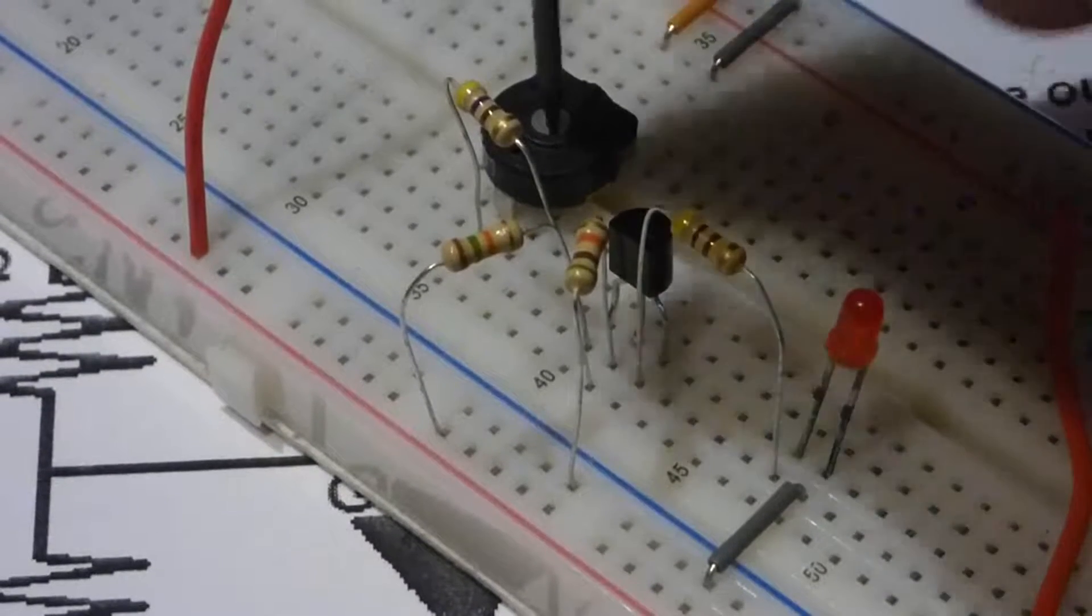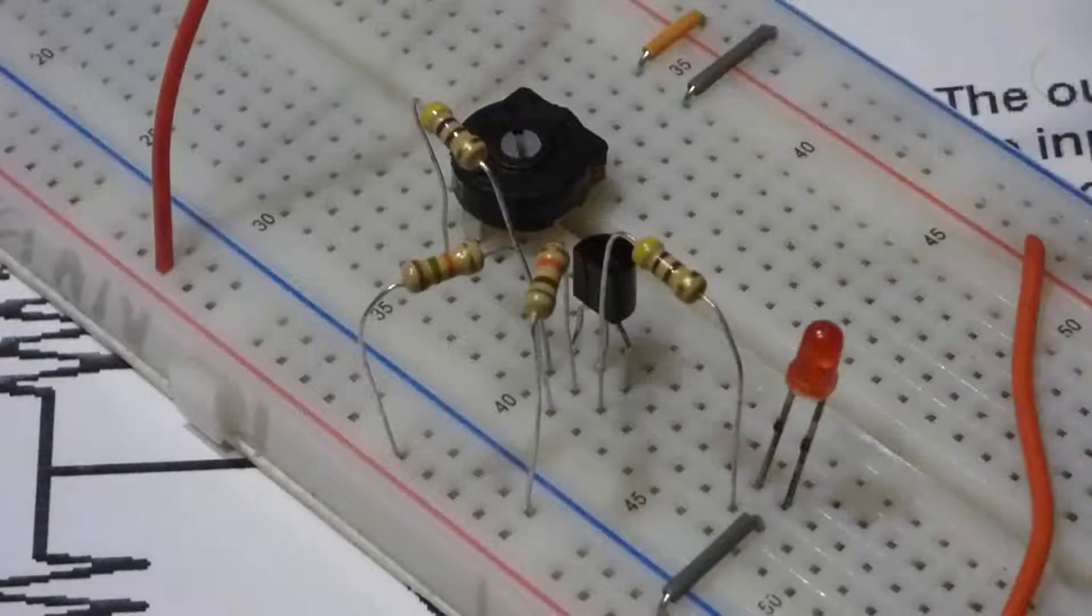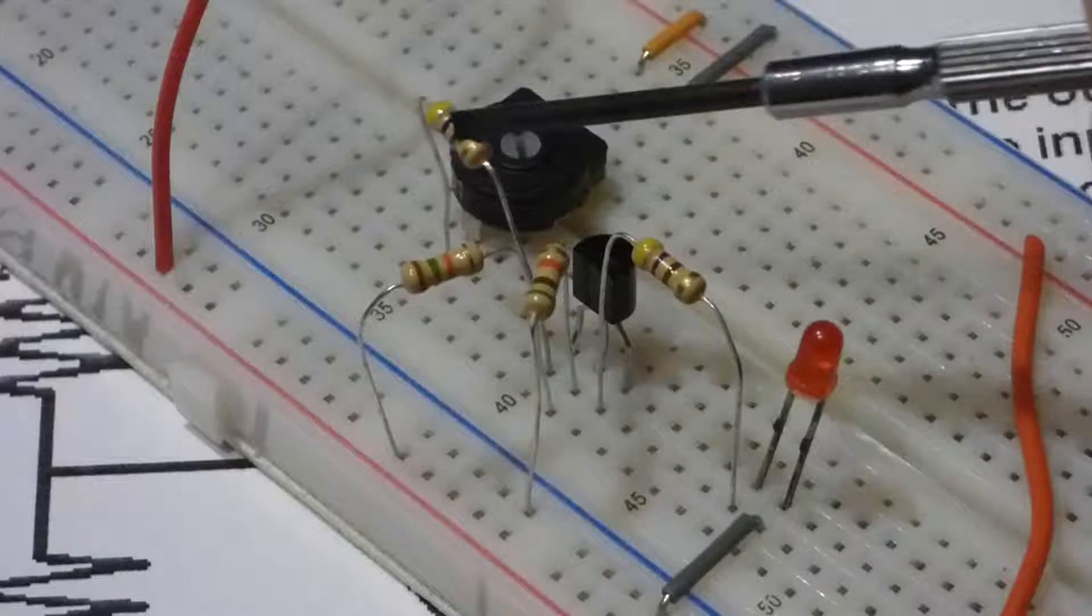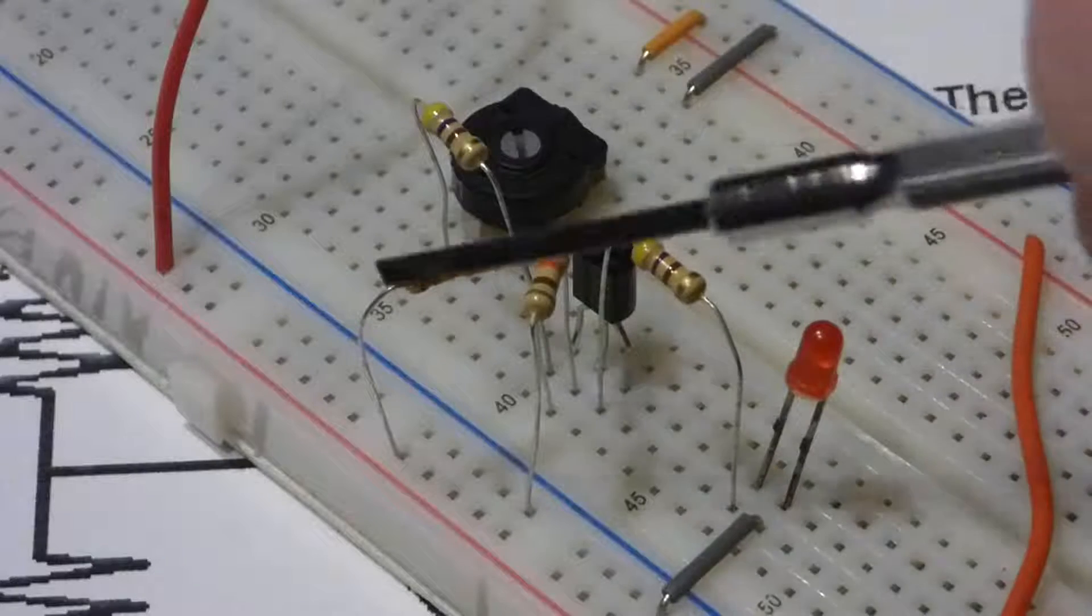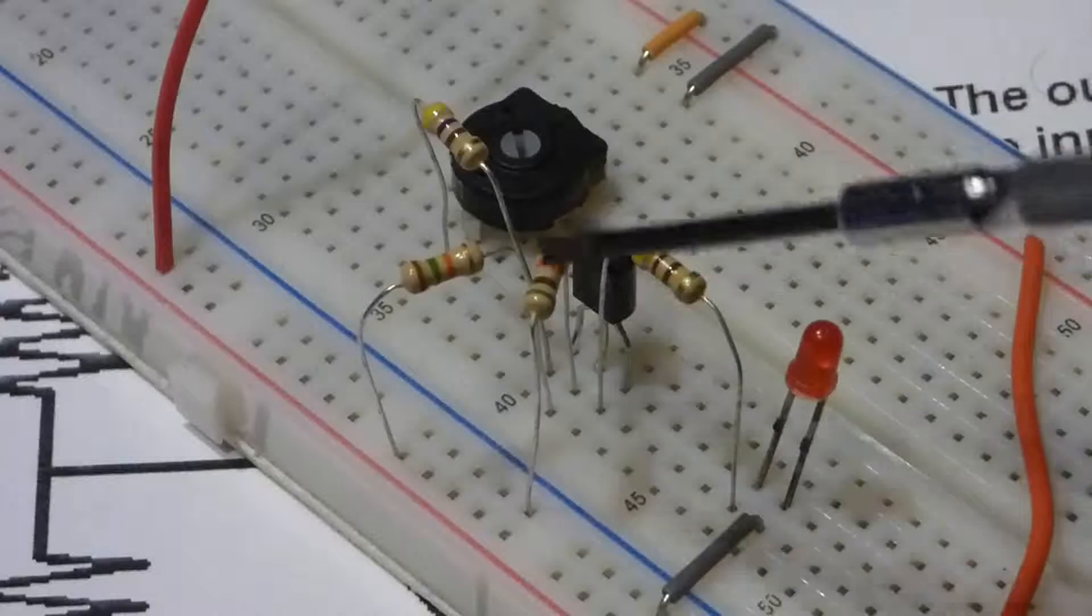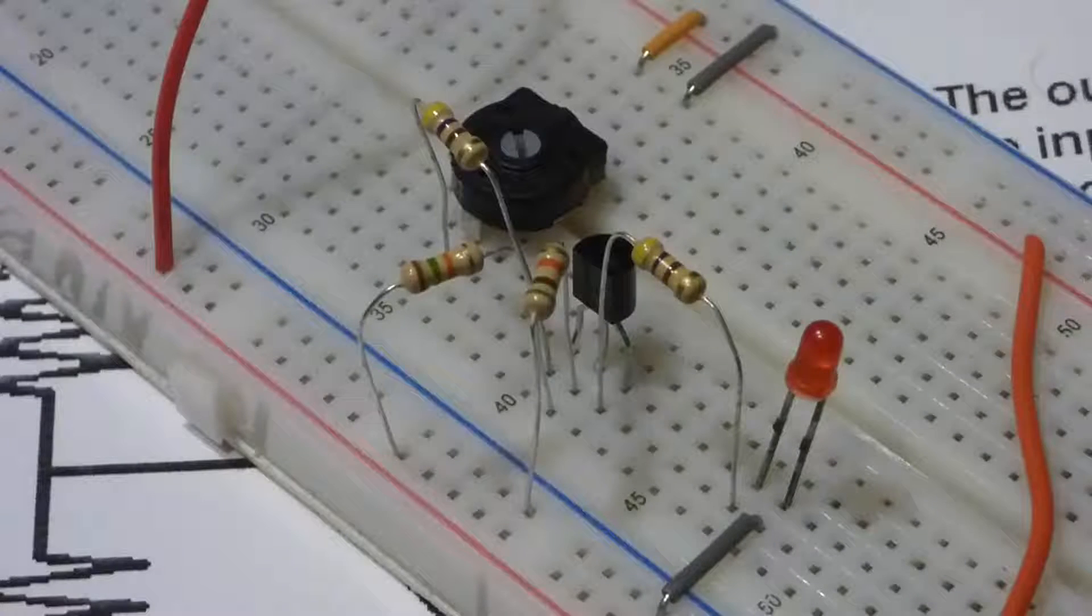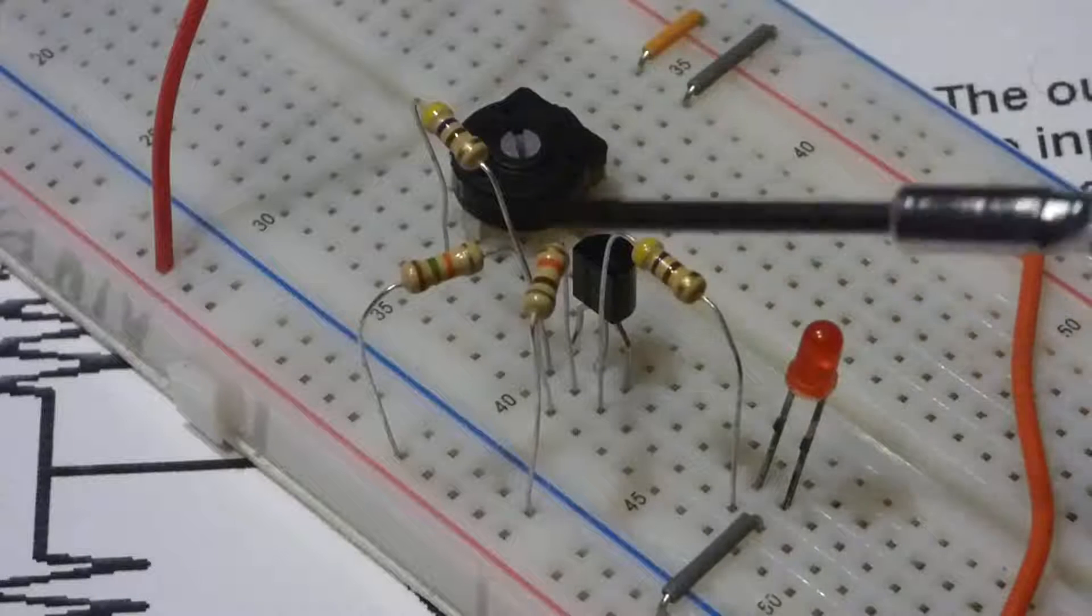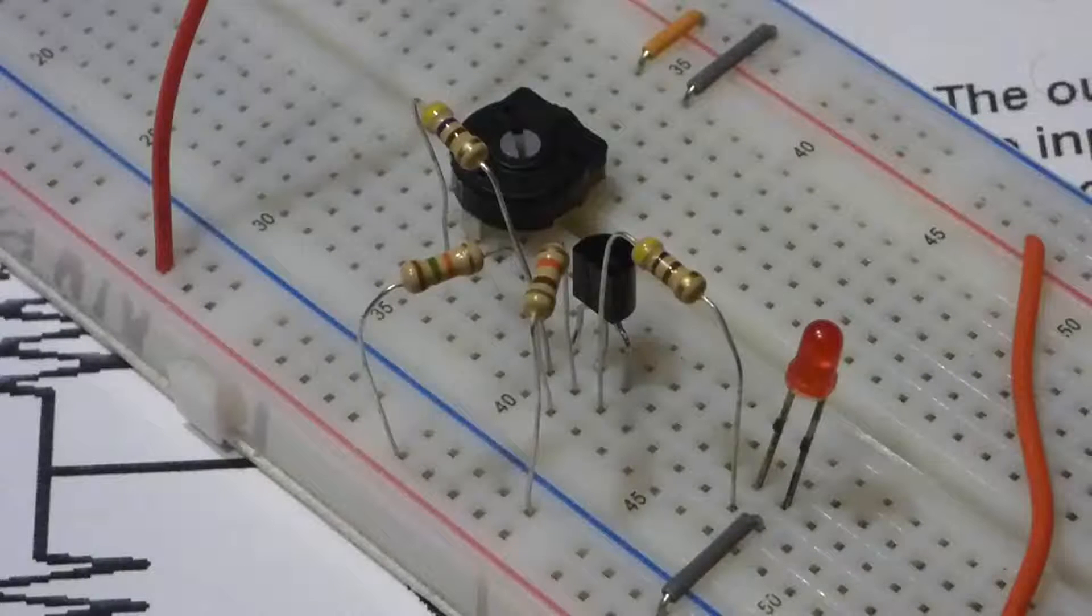And so when the voltage of this potentiometer through the resistor reaches about the same voltage as the two resistors are set, then it will turn on. But when you lower it below the voltage of these two resistors, then it will turn off.